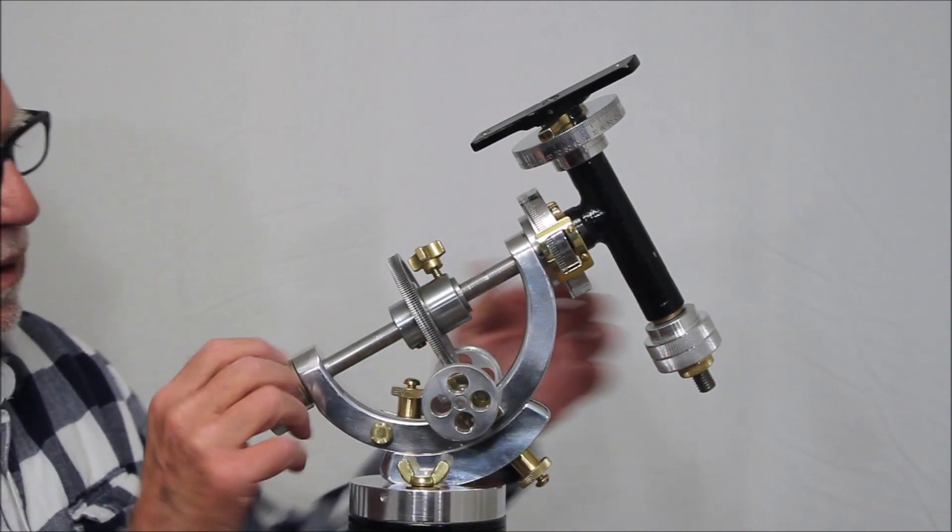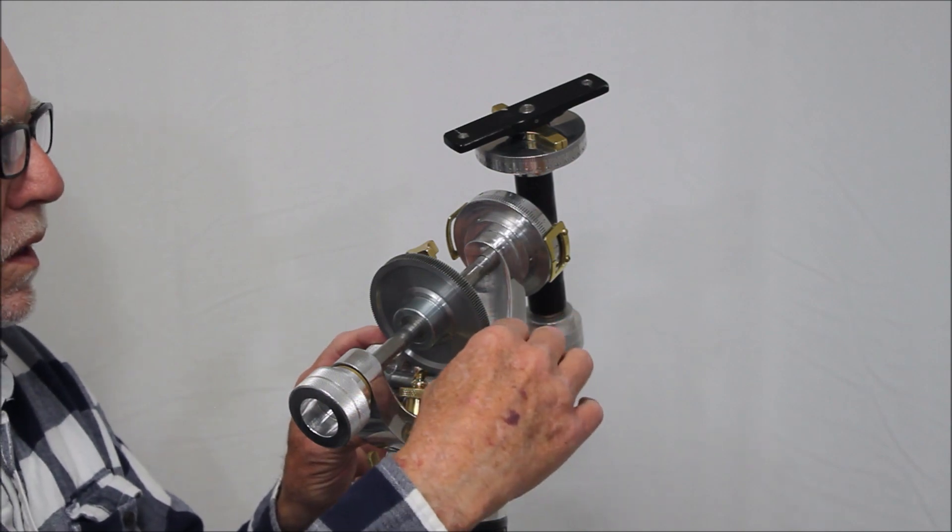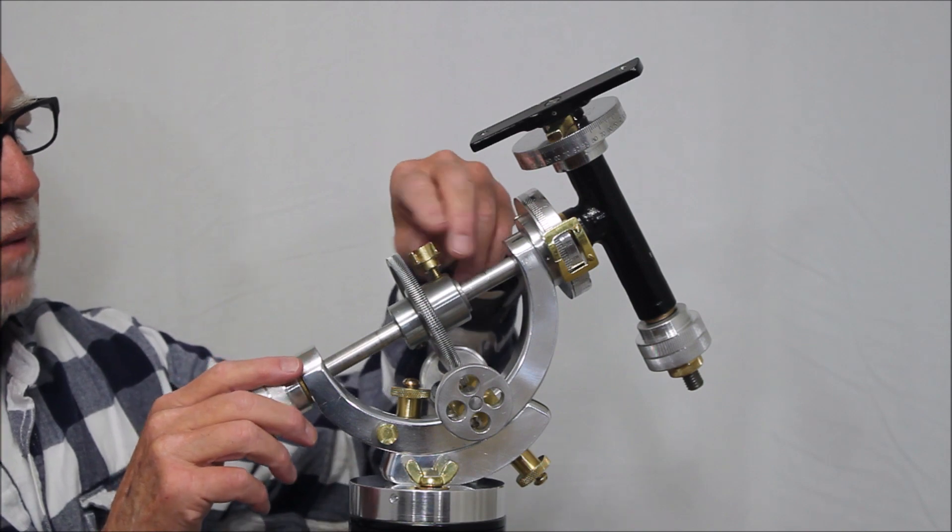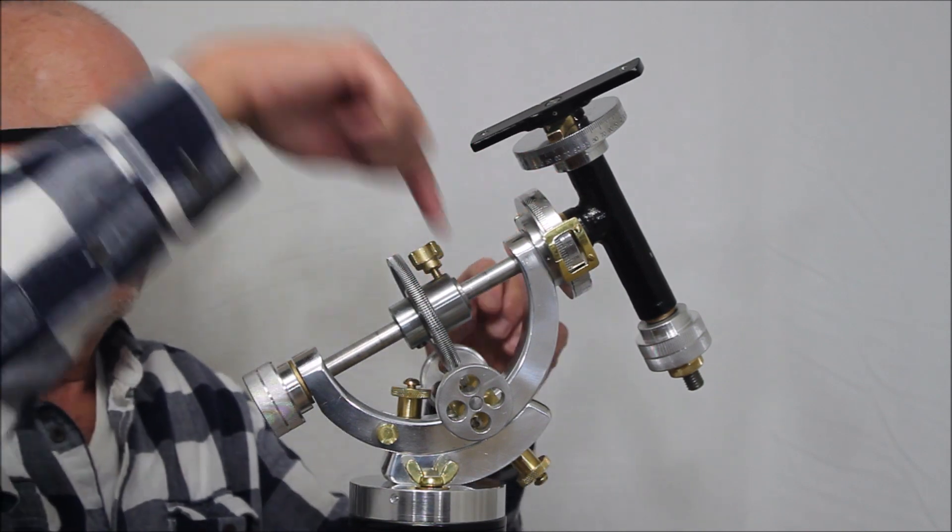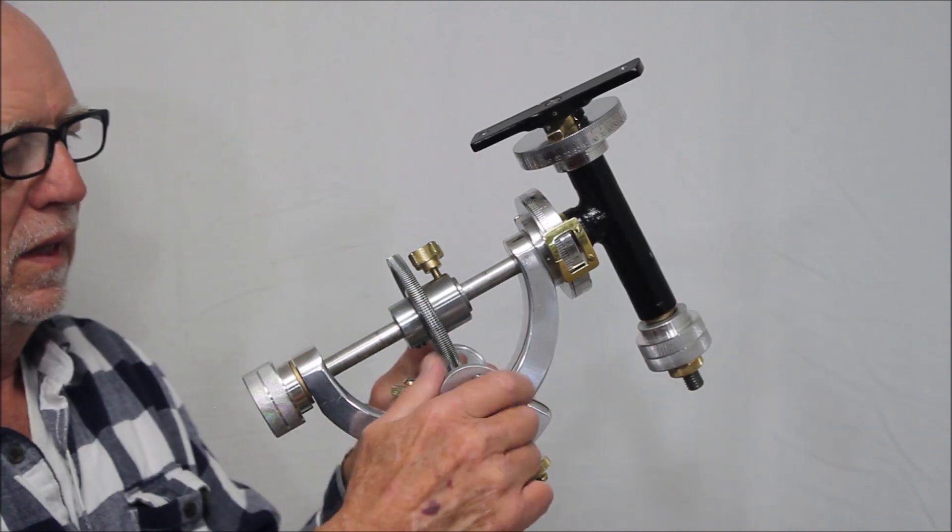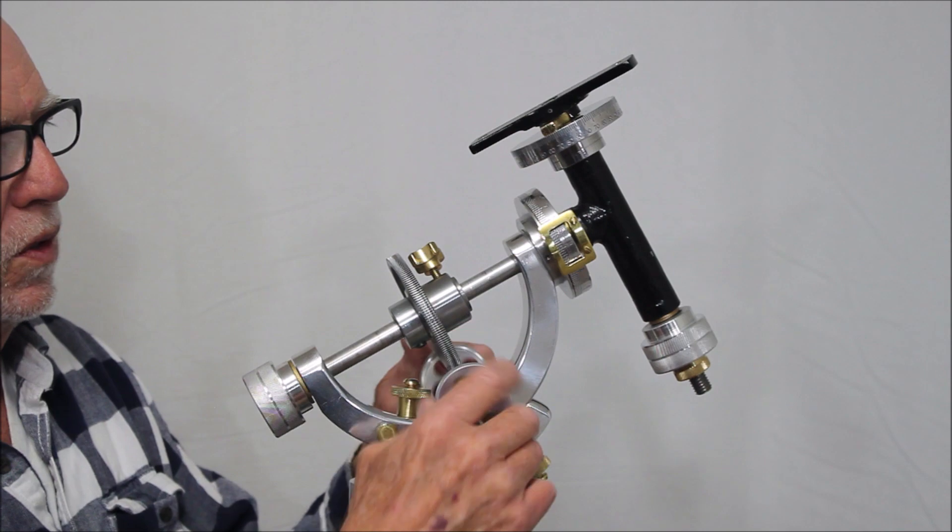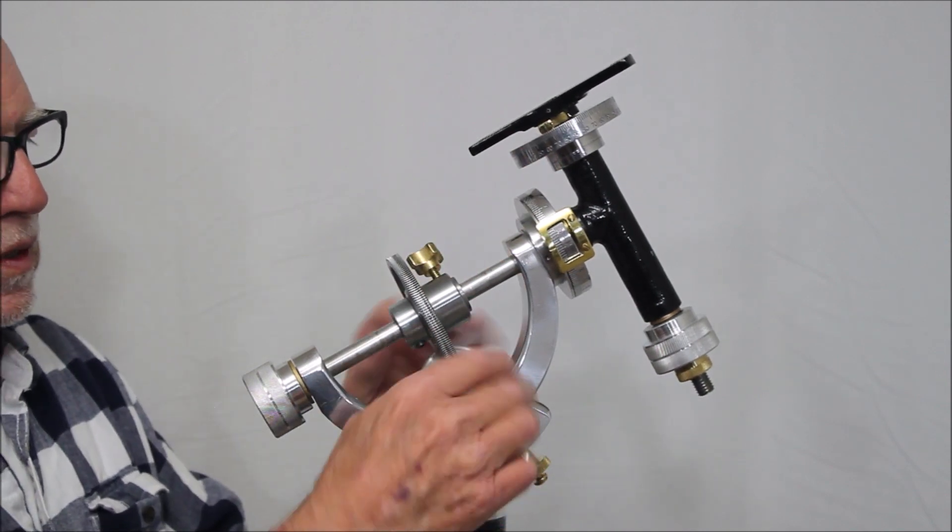These knobs are of course removable here. Let me show you how the clutch works. It's a very primitive friction clutch. It just grabs onto that. I think you can see I'm turning the slow motion. It's moving. Loosen it up and of course it's disengaged.